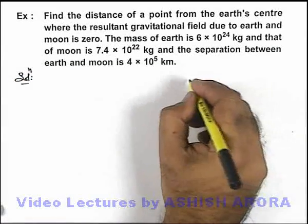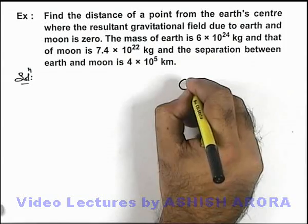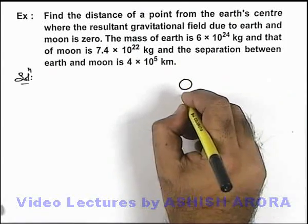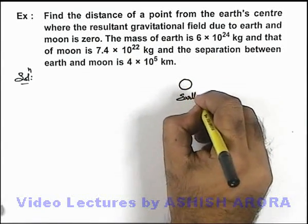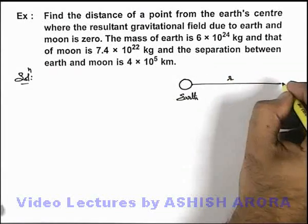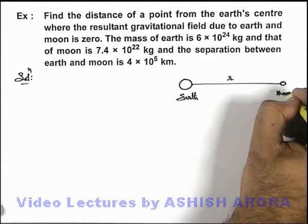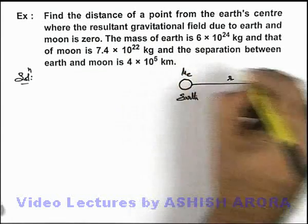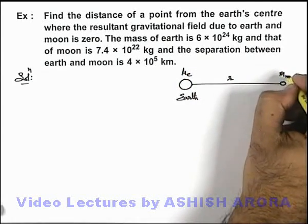In this situation, if we draw the physical diagram, say this is earth and at a distance r from earth, this is moon, which are given with masses m_e and m_m.